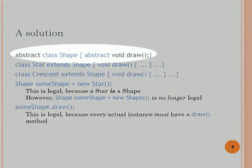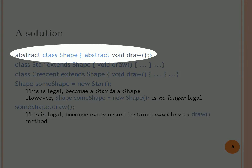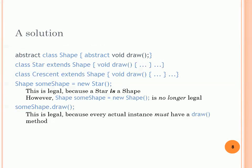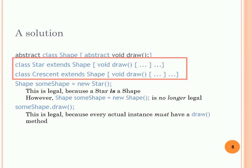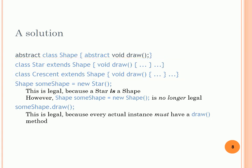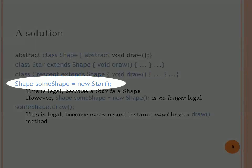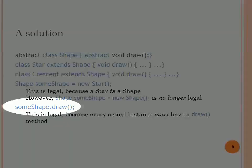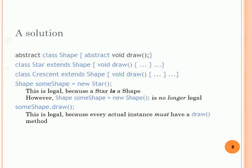Here is the solution: we create an abstract class called Shape with an abstract method called draw — this method has no body. We then create two classes, Star and Crescent, both extending Shape, and each implements the draw function accordingly. In the main, we create an object of type Shape and instantiate it with Star. Now we can call the draw function normally without any error, because draw was declared in the abstract class Shape.